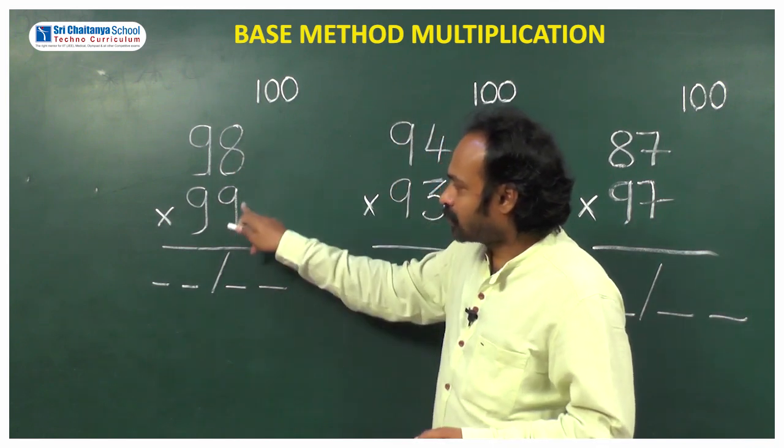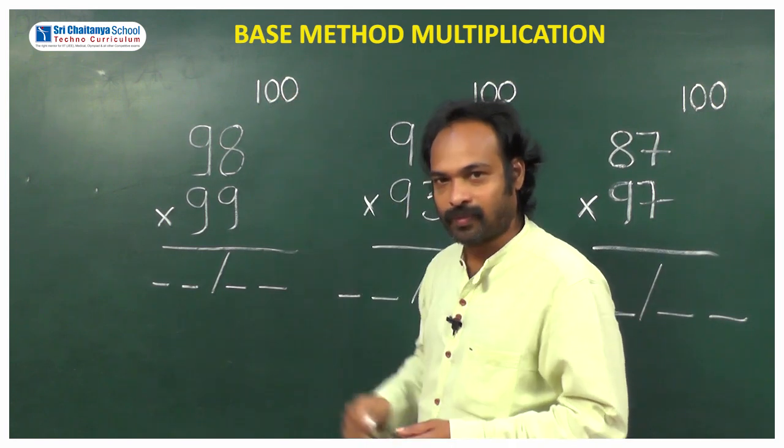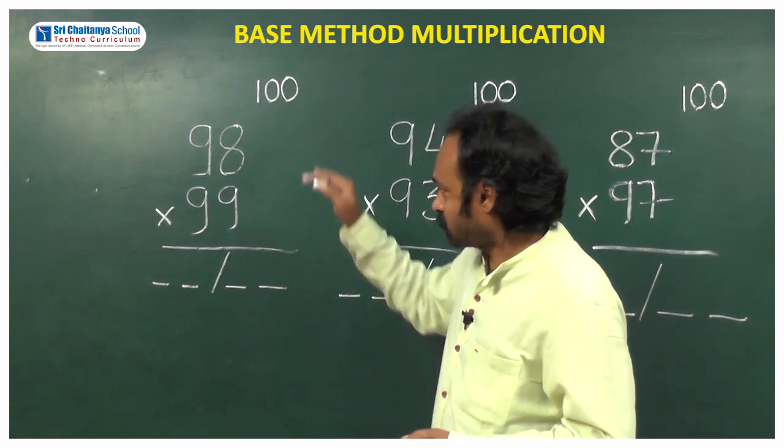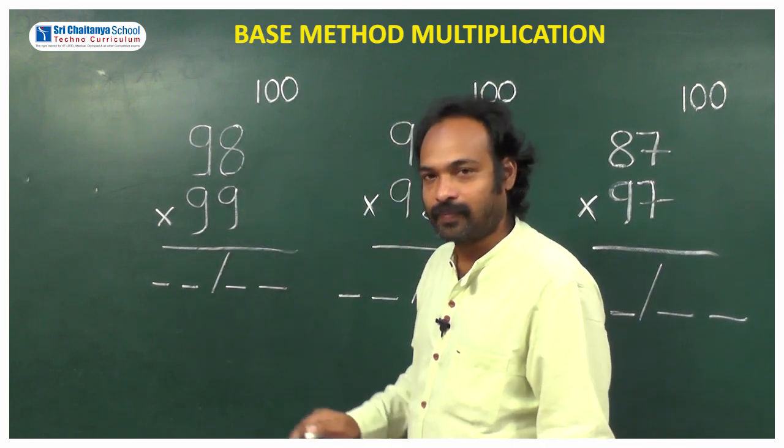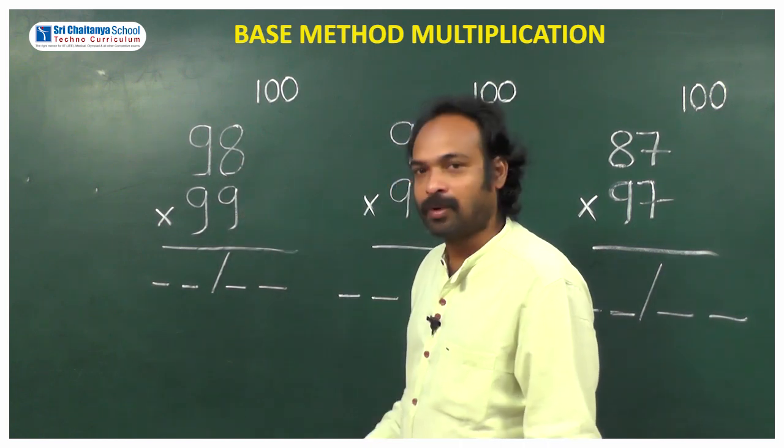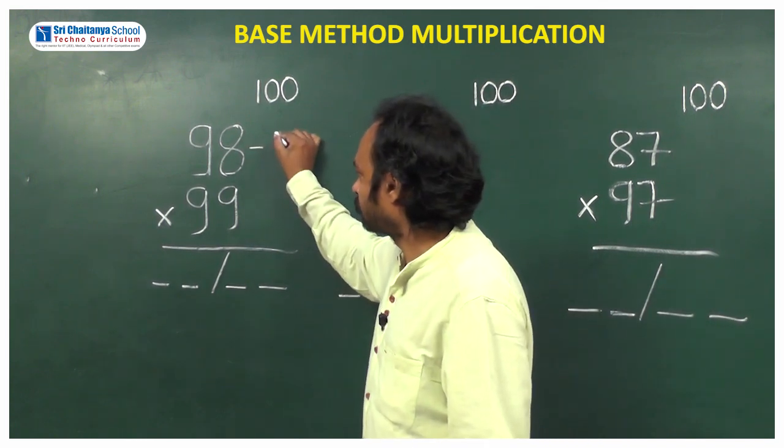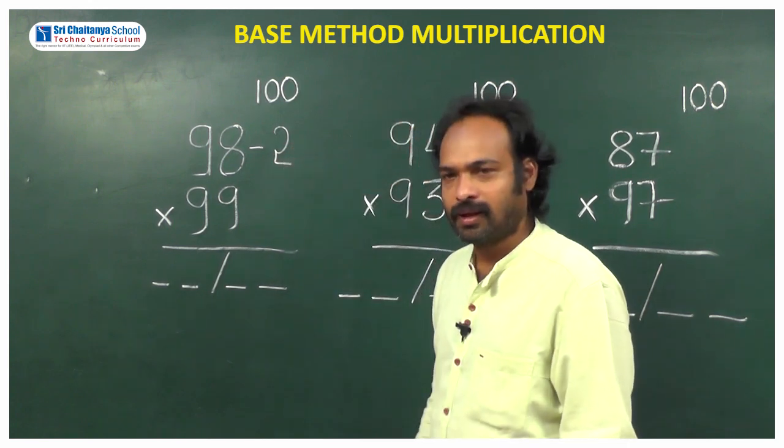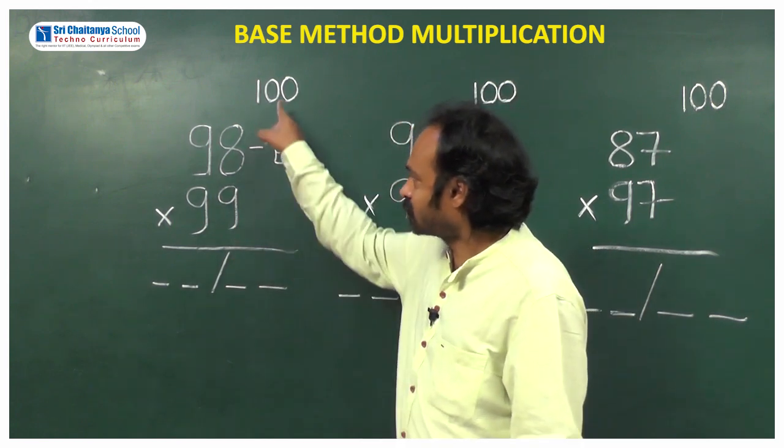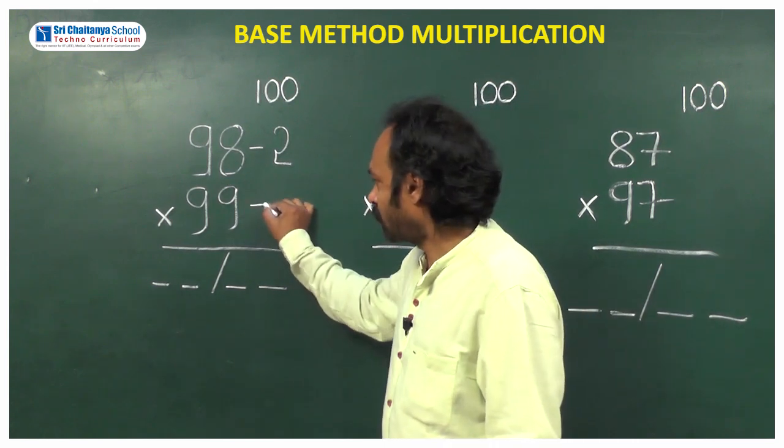Here these numbers are near to 100. I am taking the base as 100. First step: what we need to do is how much the given numbers are less than 100. So 98 is how much less than 100? Two. Again, 99 is how much less than 100? One, so you are writing one here.